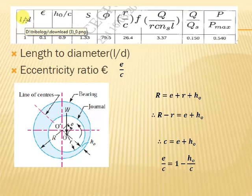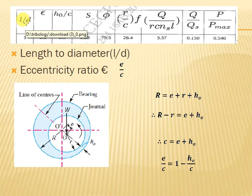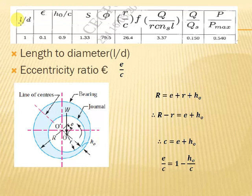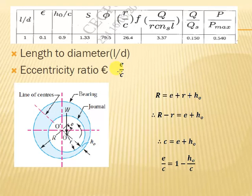Next parameter is epsilon, the eccentricity ratio. Eccentricity ratio is the ratio of eccentricity to the clearance. To understand this, consider the bearing where capital R is the radius of the bearing. Capital R has three elements: the eccentricity e (distance O to O'), the radius of journal r, and the minimum oil film thickness HO. So, R = e + r + HO.